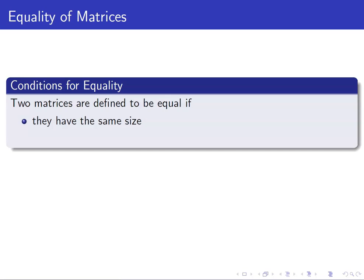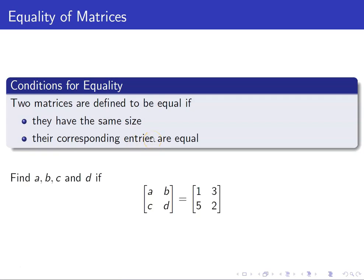Let us now determine the conditions for two matrices to be equal. There are two conditions that must be satisfied. First, they should have the same size. Second, their corresponding entries must be equal. For example, we want to determine the values of A, B, C, and D so that these two matrices are equal. Note that the first condition is already satisfied — we already have the same size. Both of them are two by two matrices. Thus, for the second condition, we just want the corresponding entries to be equal.